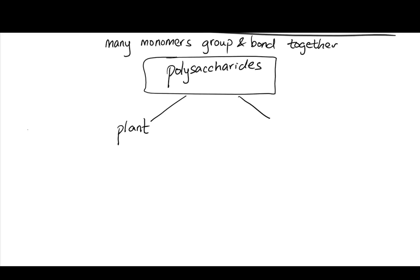So polysaccharides has two major categories, the one under the plant and the one under the animal. The one under the plant, you can have two types. The first one is starch. The second one is cellulose. There are also two types under the animal category, the chitin and also glycogen.